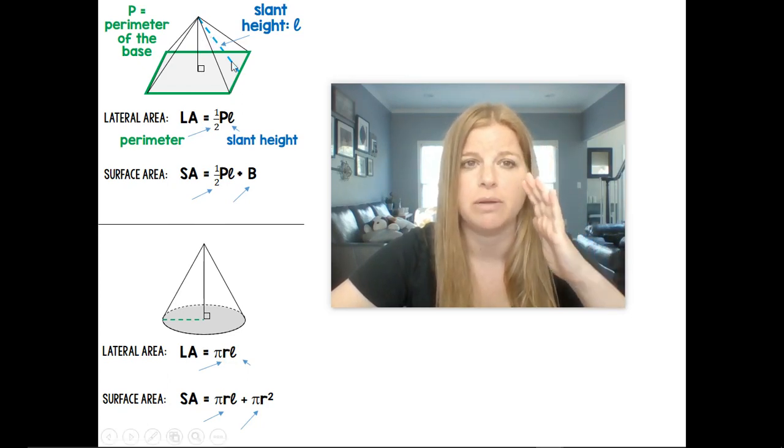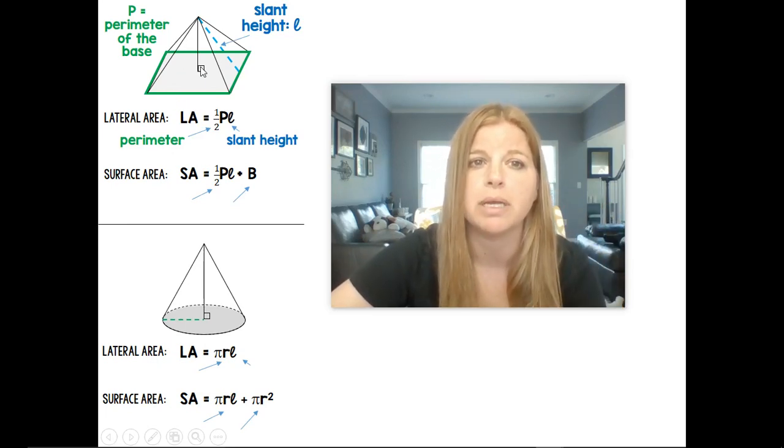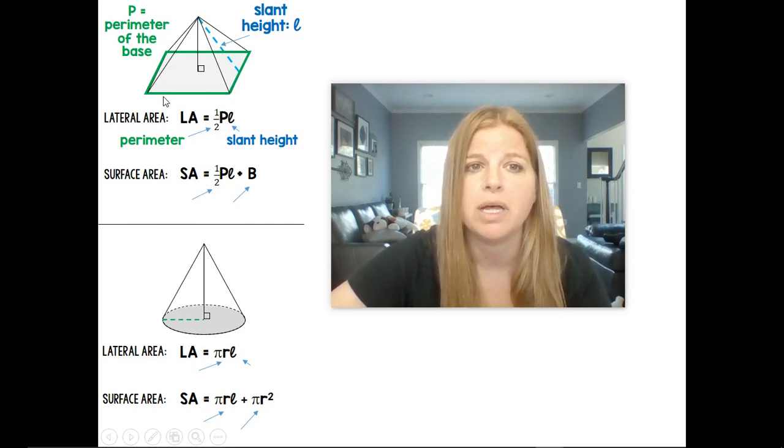And the reason why we would do this is that it actually is giving us the area of all four triangles in this square pyramid in one shot. So it's one half the perimeter times that slant height.